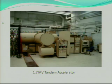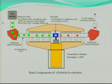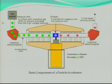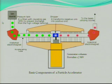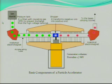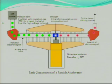This picture is the 1.7 MV tandem accelerator in MIBL. The negative ions enter the accelerator and are accelerated in the first region. In the terminal, the negative ions will collide with nitrogen gas and then get a true positive charge. After this, the positive ion will be accelerated again in the second region. For the 1.7 MV tandem accelerator, at the high-energy end, we can get protons with a maximum energy of 3.4 MeV.